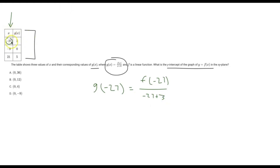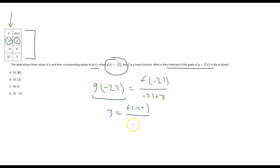Now here's the thing: because in our table we get values of g of x, g of negative 27 can also be rewritten as just 3 — it's right there in the table. So 3 equals f of negative 27 over negative 27 plus 3. If we write this out, we have f of negative 27, and then negative 27 plus 3 is just going to be negative 24. So now we can just isolate for f of negative 27. So 3 times negative 24 is going to be negative 72, which equals f of negative 27.